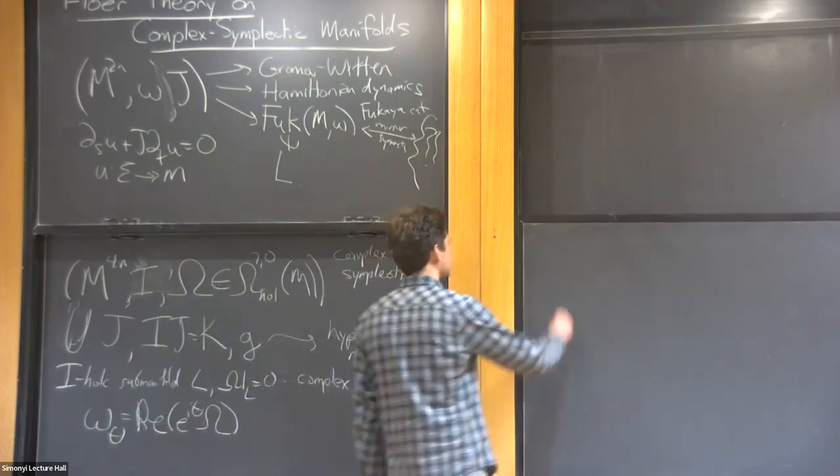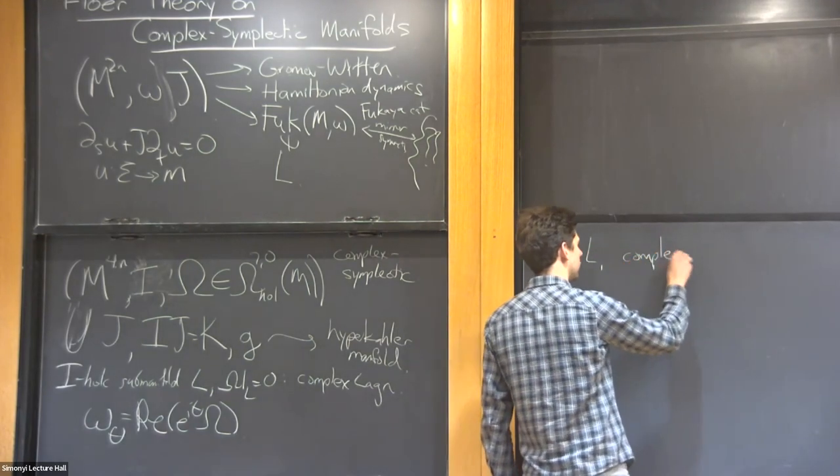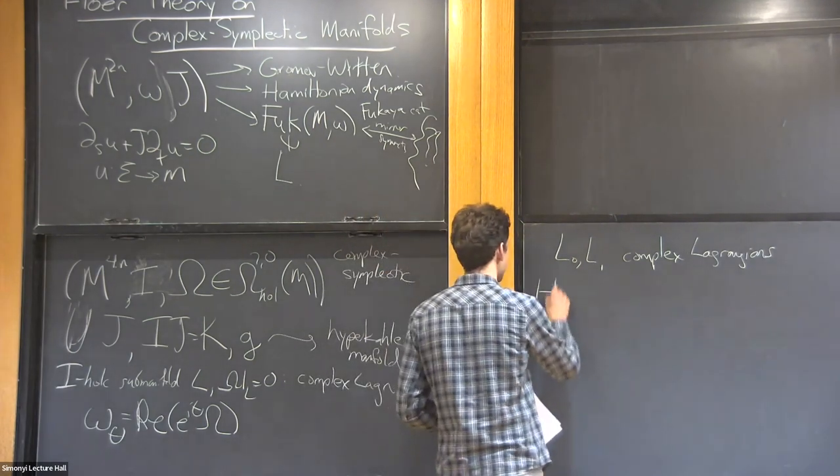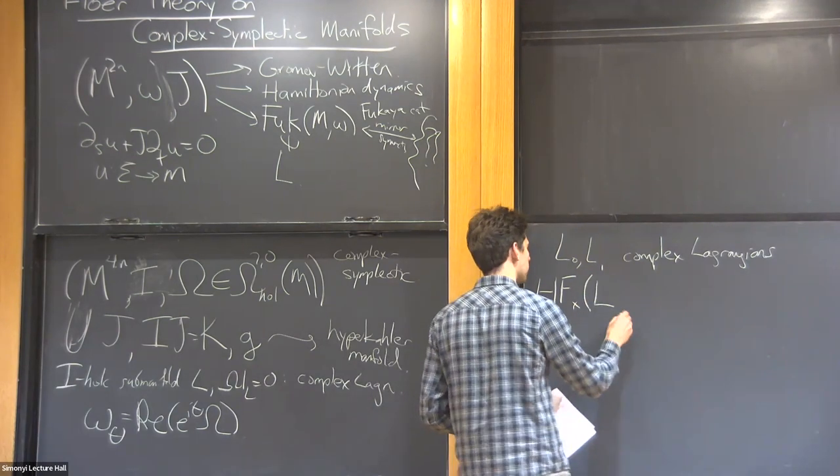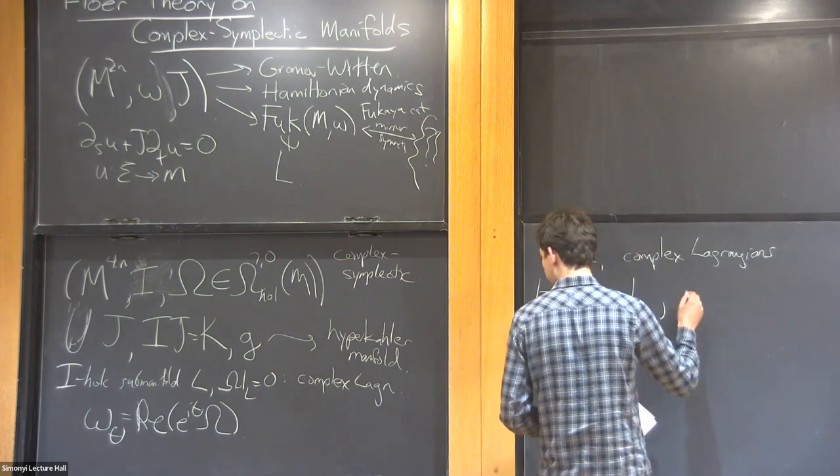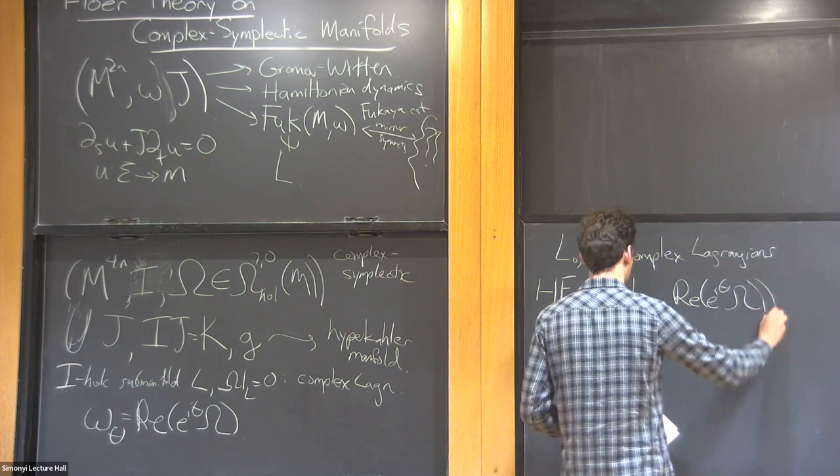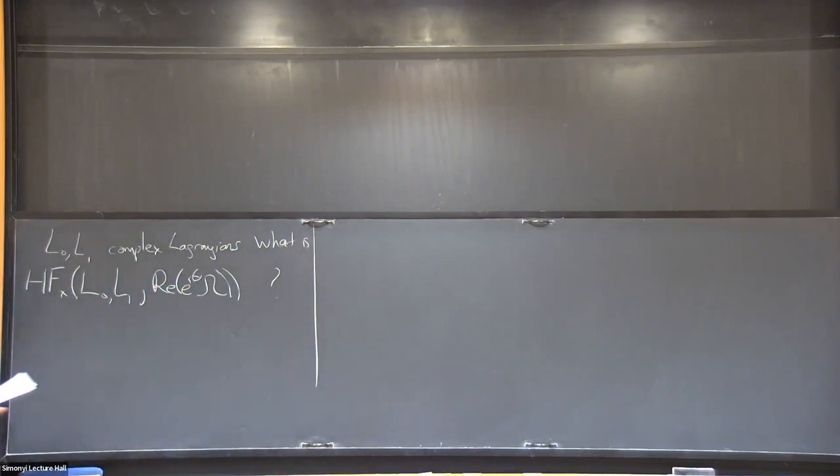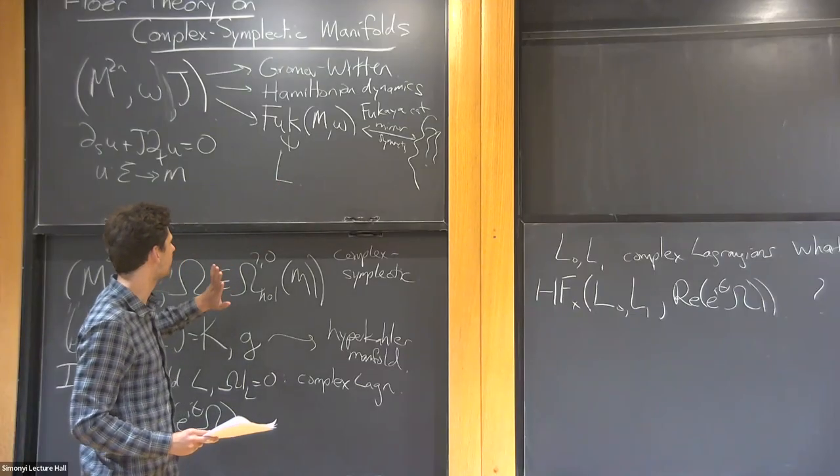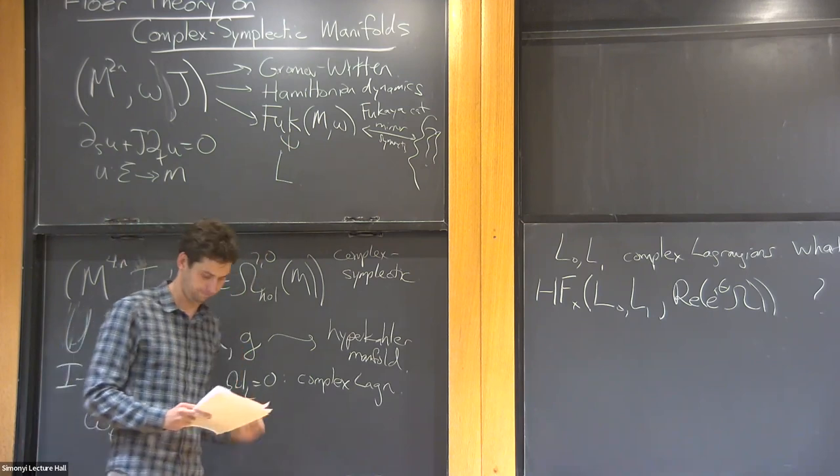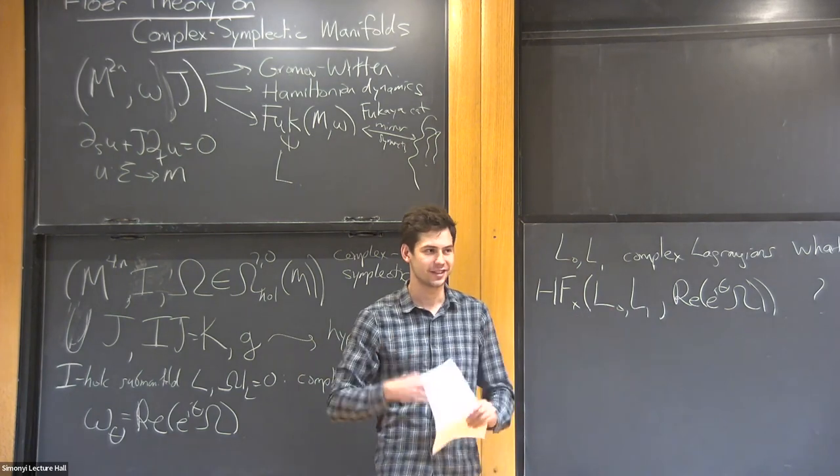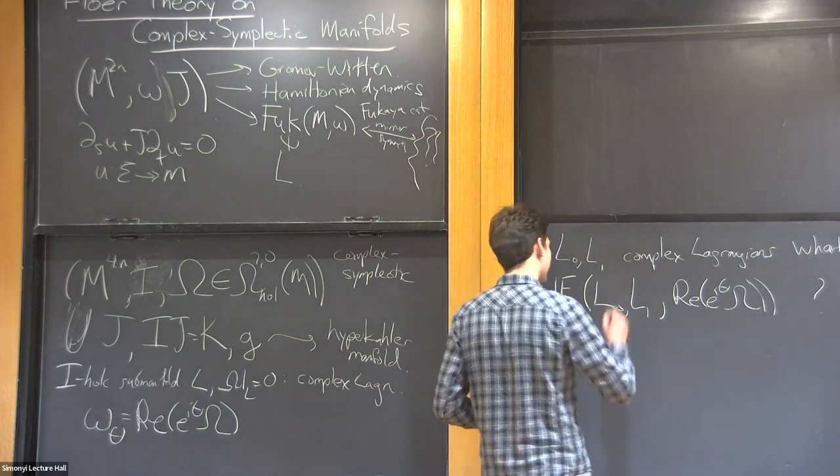We can try to study its symplectic invariants. Let's say L0, L1 are complex Lagrangians. A famous symplectic invariant, maybe the basic one of this pair, is something called the Lagrangian Floer homology of these Lagrangians, and you have to choose which symplectic form—any one of these turns out not to matter.